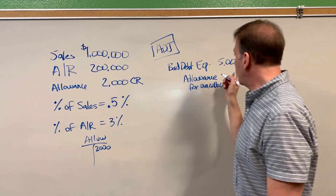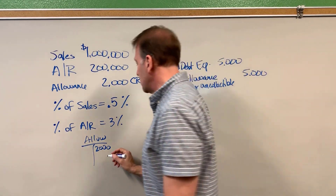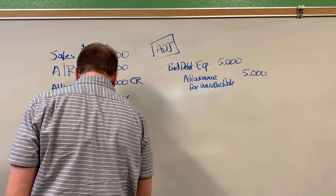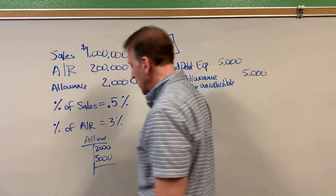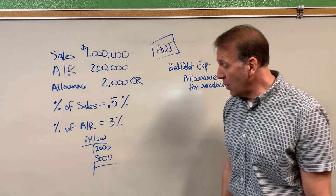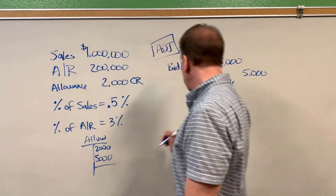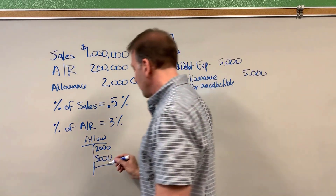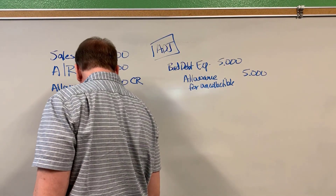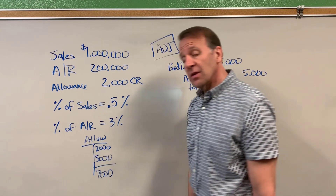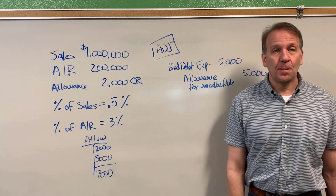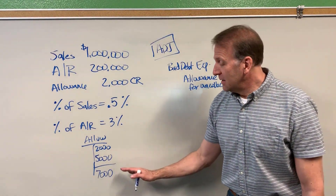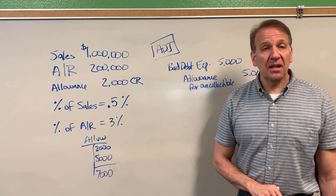So this is the adjustment. Remember, we already had $2,000 in there, so when we add $5,000 more to that — because that's what the allowance is — another $5,000 credit means it now has a balance of $7,000. So that's our ending balance in the allowance.